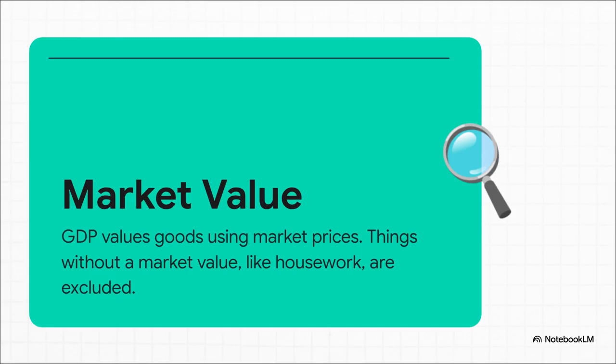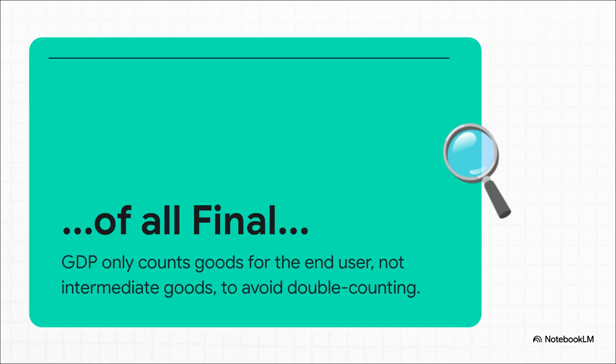The flip side of that is pretty important: if something doesn't have a market value — like the childcare you do at home for your own kids — it's not counted. Next piece of the puzzle: "all final." This is so, so important. GDP only counts final goods. Think about a pizza: GDP counts the price you pay for the finished pizza at the restaurant. It doesn't count the flour, the cheese, or the tomatoes the restaurant bought. Why not? Because the value of all those ingredients is already baked into the price of the final pizza. If we counted both, we'd be double counting, and the number would be way off.